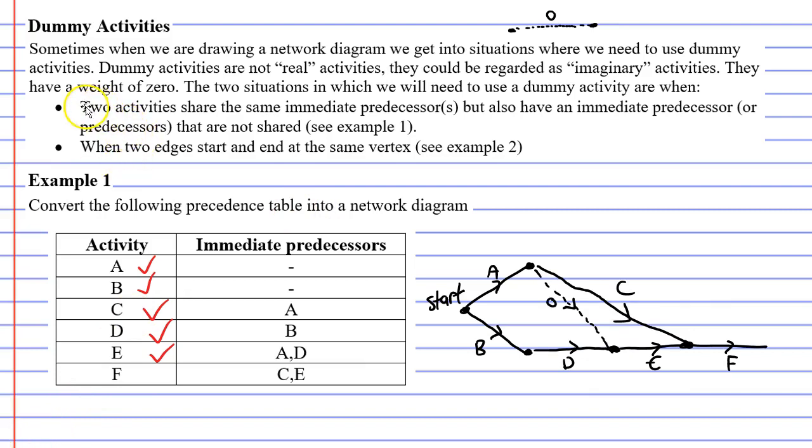Now let's go back to that dot point that we mentioned here. We said if you look at example one, you will see that you will need a dummy if two activities share the same immediate predecessor or predecessors, but also have an immediate predecessor or predecessors that are not shared. You will see this when we look at activities C and activity E.